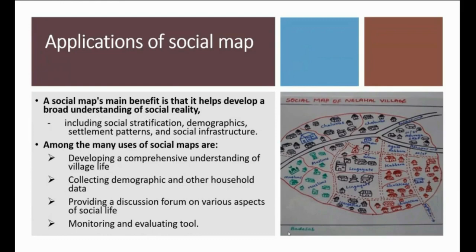Application of social map: a social map's main benefit is that it helps develop a broad understanding of social meaning, including social stratification, demographics, settlement patterns, and social infrastructure. When we enter a village, it is difficult for us to know the social stratification quickly — or the demographic pattern, settlement patterns, social infrastructure available in the village. When we draw a social map with the help of the villagers, they can identify all these things. Social maps are also tools for developing a comprehensive understanding of village life, collecting demographic and other household data, providing a discussion on various aspects of social life, and for monitoring and evaluation.